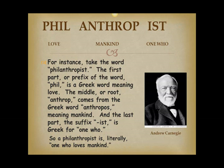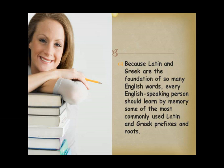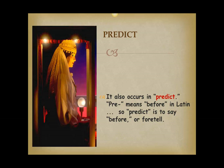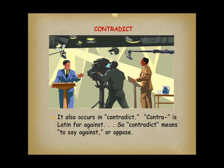Because Latin and Greek are the foundation of so many English words, every English-speaking person should learn by memory some of the most commonly used Latin and Greek prefixes and roots. Knowing the root dict, for instance, can give you the clue to the meaning of many words. It comes from the Latin word dicere and means to say or speak. It occurs in words like dictator and dictionary. It also occurs in predict — pre means before in Latin, so predict is to say before or foretell. It also occurs in contradict — contra is Latin for against, so contradict means to say against or oppose.